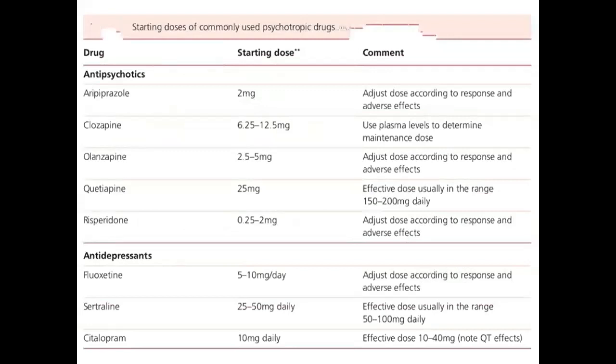Some starting doses of commonly used psychotropic drugs. First, antipsychotics: trifluoperazine starting dose is 2 mg; clozapine 6.25–12.5 mg — use plasma level to determine maintenance dose; olanzapine 2.5–5 mg — doses adjusted according to response and adverse effects; quetiapine 25 mg — effective dose usually in the range 150–200 mg daily; risperidone starting dose is 0.25–2 mg — adjust dose according to response and adverse effects.